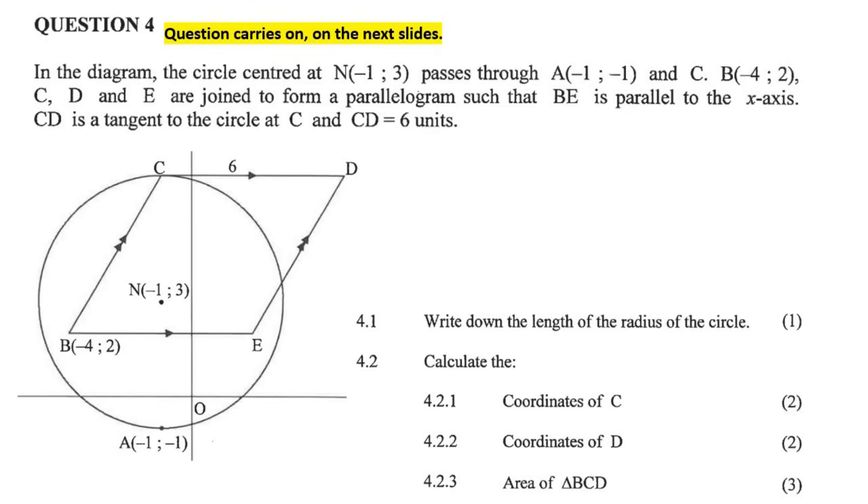Passes through A and B. C and D are joined to form a parallelogram such that BE is parallel to the x-axis. So that's important, BE is perfectly parallel to the x-axis. CD is a tangent, so they've given us the length of this line. CD is 6 units. That's interesting.